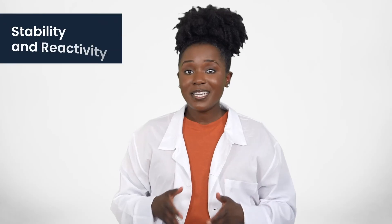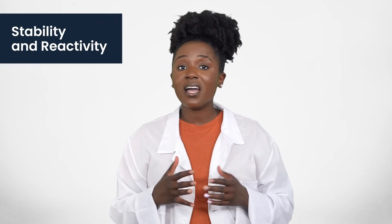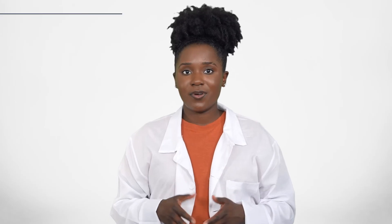Section 10 of the SDS provides information on the stability and reactivity of the chemical. This includes information on any conditions that may cause the chemical to become reactive or unstable, such as exposure to heat, pressure, or incompatible substances. This section may also provide information on any hazardous decomposition products that may be produced if the chemical is exposed to heat or other conditions.